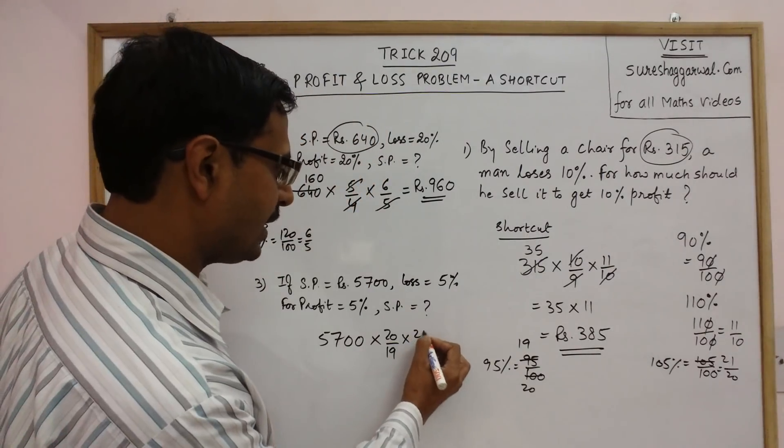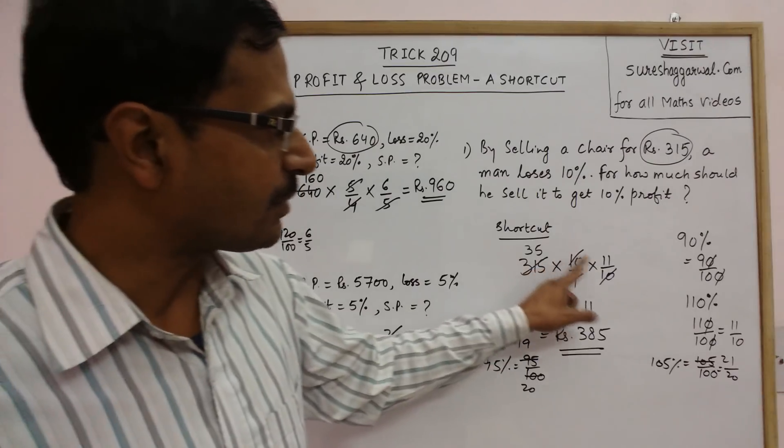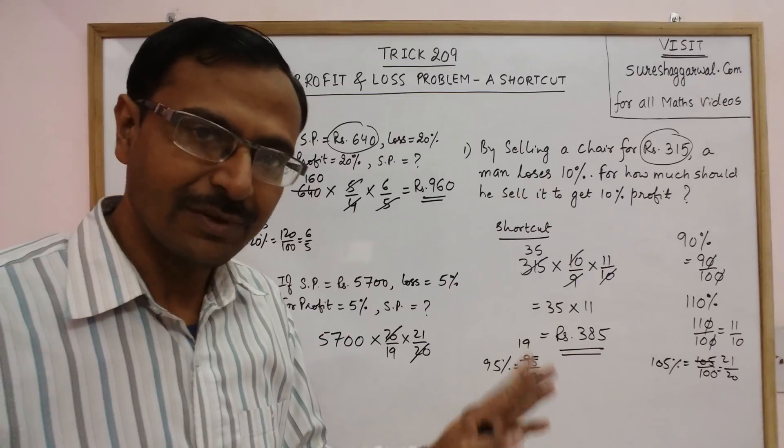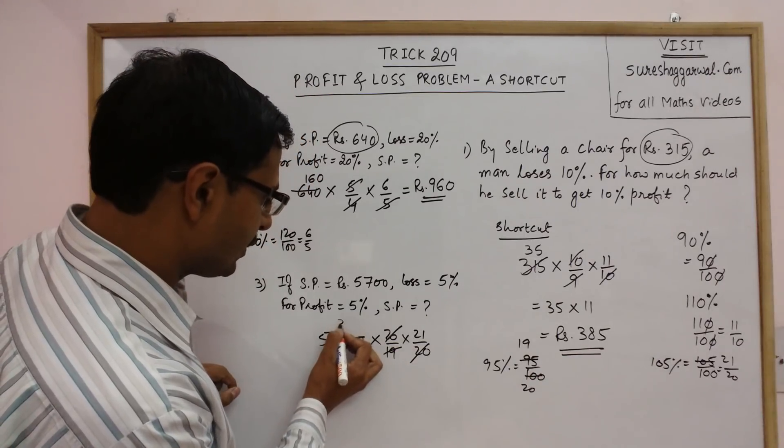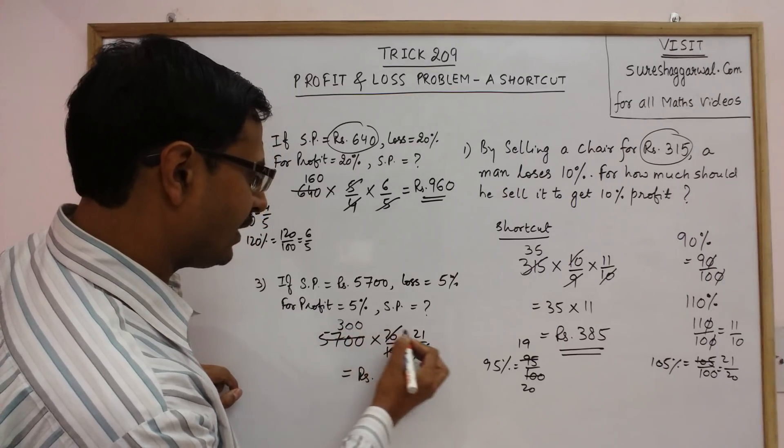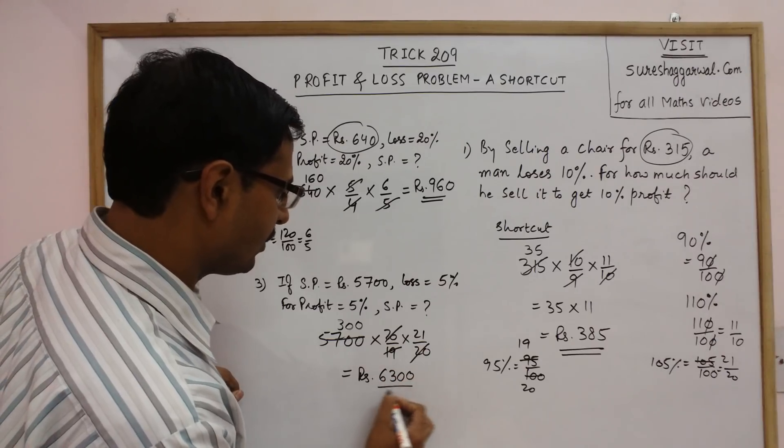Write 21 upon 20 as it is. The 20 gets cancelled. Our calculation is very simple now: 19 into 300 equals 5700, so the final answer is 21 into 300 which equals 6300 rupees.